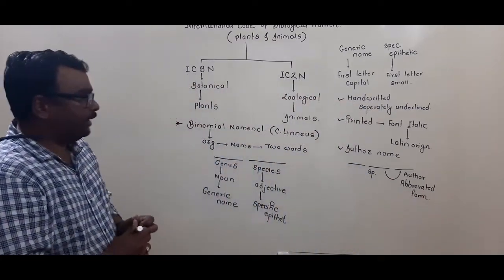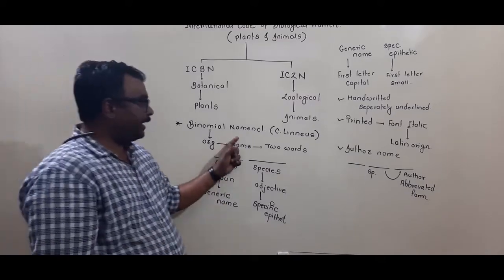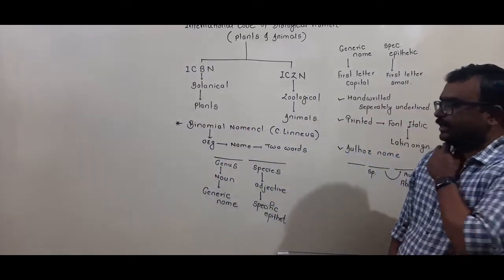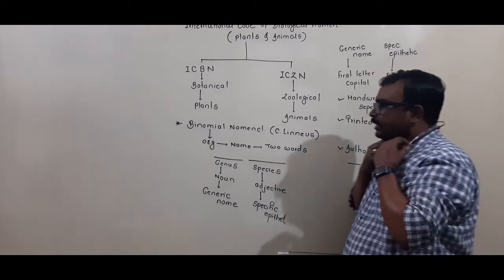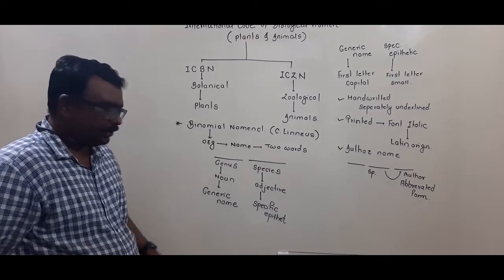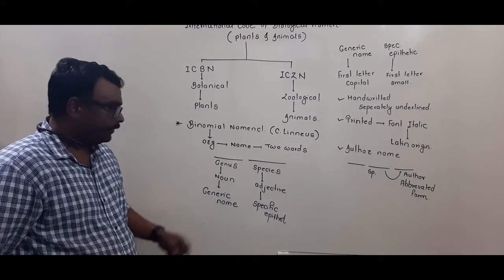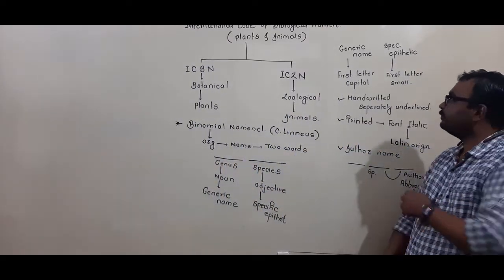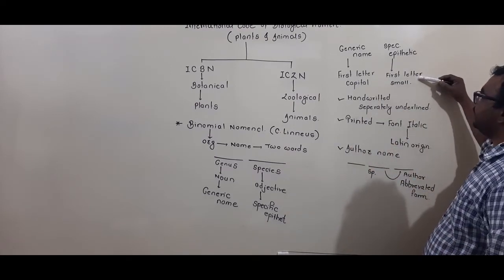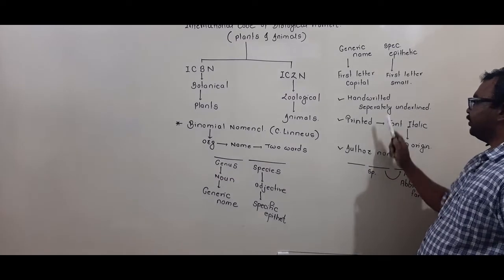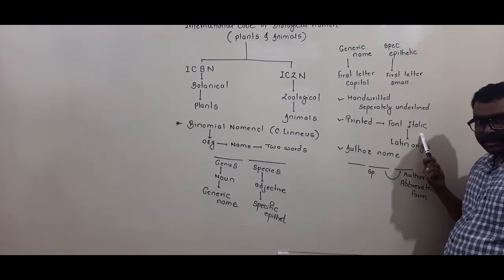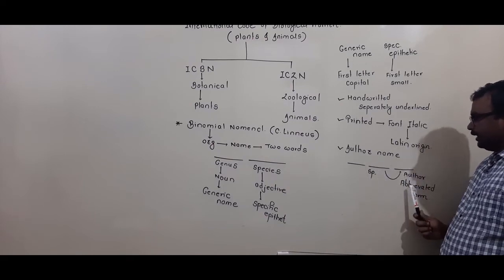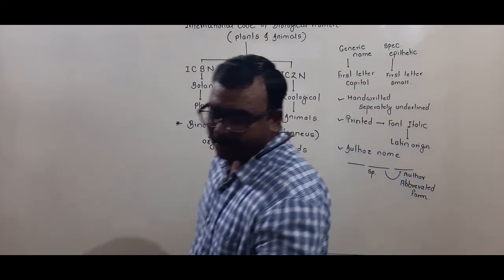To rapidly revise: binomial nomenclature was proposed by Carolus Linnaeus. Each organism is given a name consisting of two words — the first word indicates genus (noun, generic name) and the second word indicates species (adjective, specific epithet). The generic name starts with a capital letter; the specific epithet starts with a small letter. When handwritten, both are separately underlined. When printed, they are in italics to indicate Latin origin. The author name appears after the specific name in abbreviated form. These are the rules of binomial nomenclature.